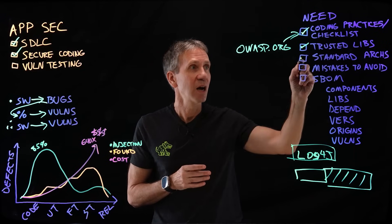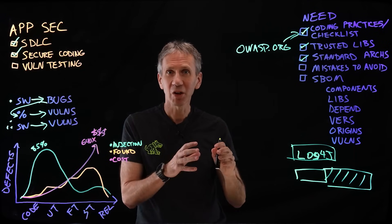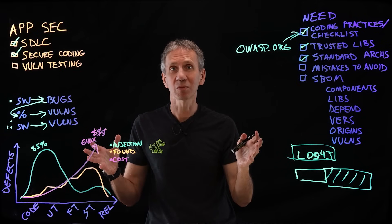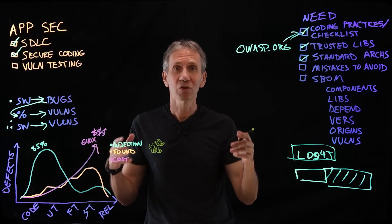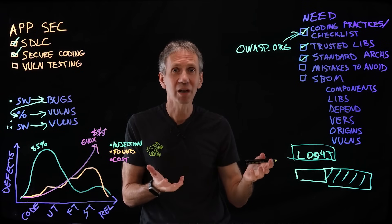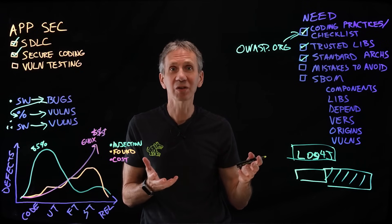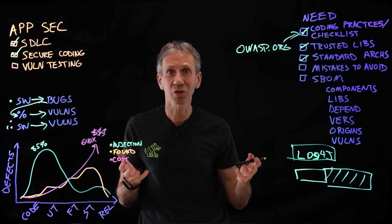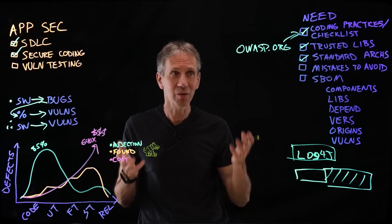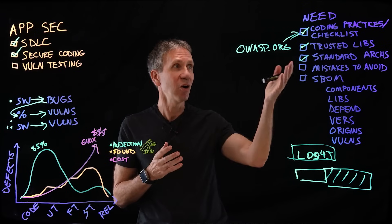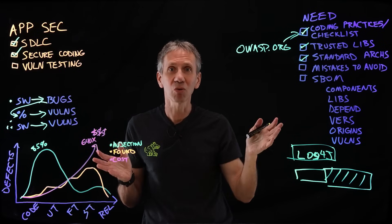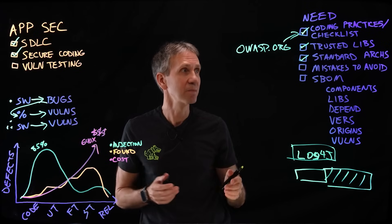Standard architectures: I want to have spelled out that when we're going to use a certain approach, this is how the system should look — spell out in advance what those would look like. IBM has an application security architecture reference website that you can take a look at, which we'll reference here. Also there are other sources, but you want to be able to spell this out for your whole organization so they can see it.